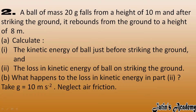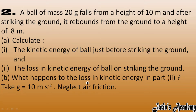A ball of mass 20 gram falls from a height of 10 meter and after striking the ground it rebounds to a height of 8 meter. We have to calculate: the kinetic energy of the ball just before striking the ground, the loss in kinetic energy on striking the ground, and what happened to that lost energy. Take g as 10 m/s² and neglect air friction.